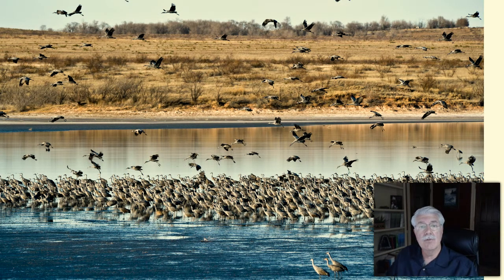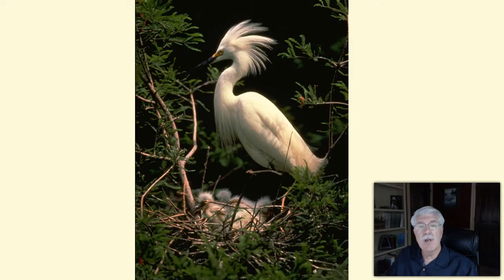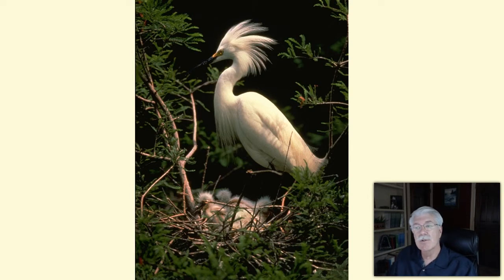A group of individuals of the same species living in the same place at the same time is called a population. A group of the same kind of algae, or a group of the same species of mussels, or a group of red-eared slider turtles are all examples of populations that you might find living in a river.